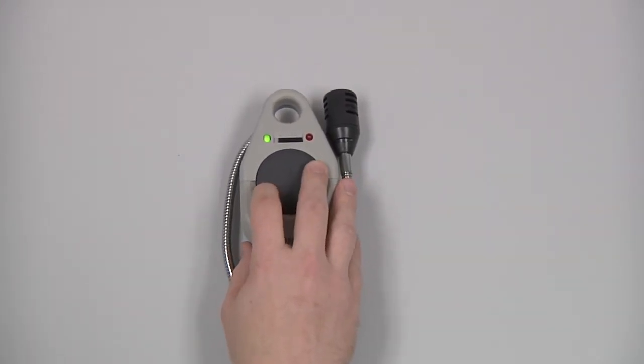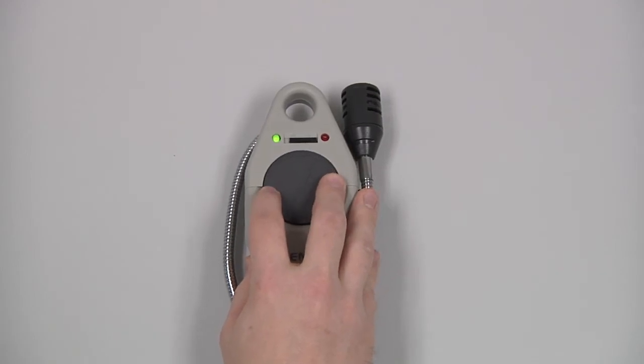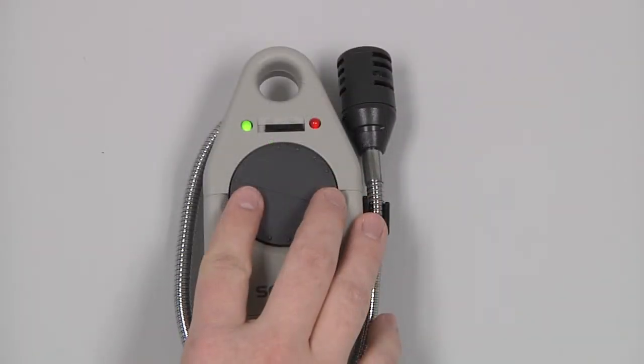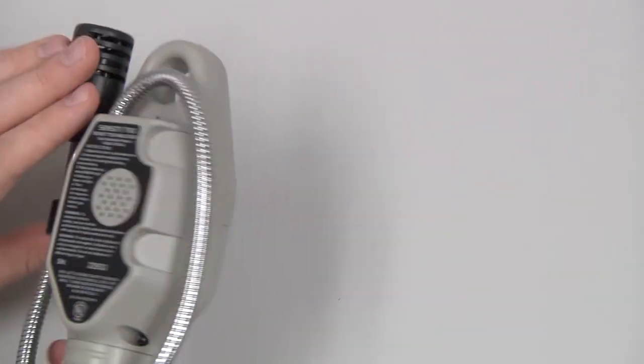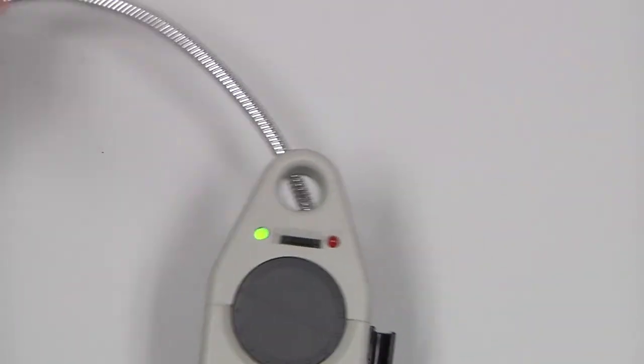We can then turn the tick wheel until we get a constant rate of about 3-4 ticks per second. We can then extend the gooseneck and begin our investigation.